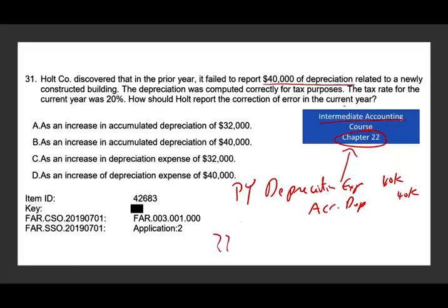What they should do is credit accumulated depreciation and debit an account. It cannot be depreciation expense because depreciation expense is already closed. The entry will be: debit retained earnings to reduce earnings by $40,000, and credit accumulated depreciation. This is the entry to fix what happened.